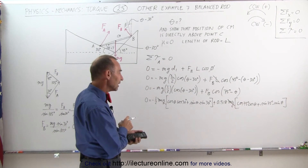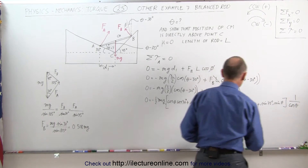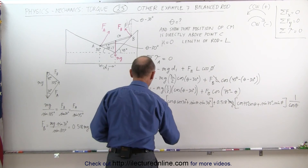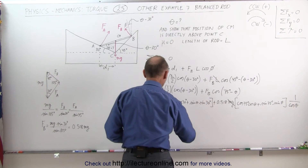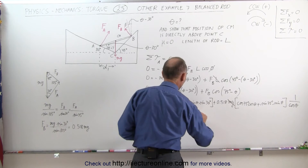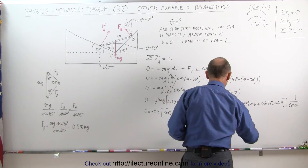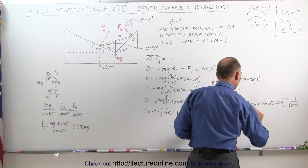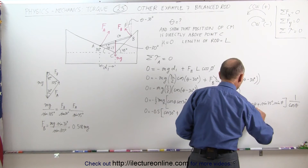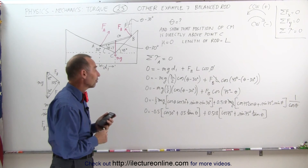To get rid of cosine(theta), we divide both sides by cosine(theta). This eliminates cosine(theta) terms and converts sine(theta)/cosine(theta) into tangent(theta). So: 0 equals minus 0.5 times cosine(30°) plus sine(30°)·tangent(theta), which is 0.5·tangent(theta), plus 0.518 times cosine(75°) plus sine(75°)·tangent(theta). Now we only have tangent(theta), making it possible to solve for theta.